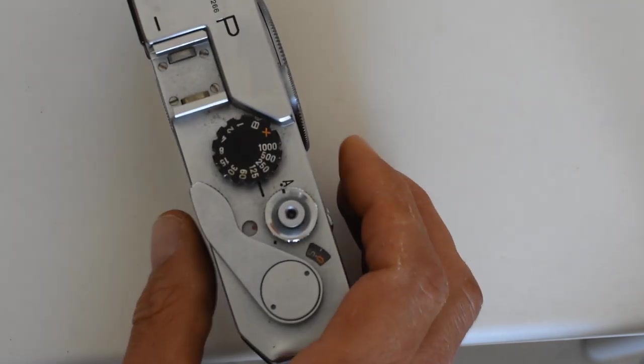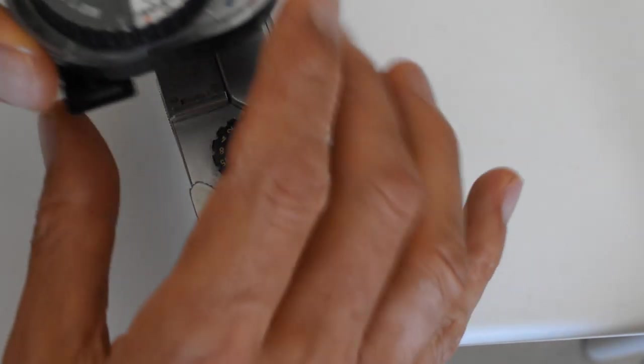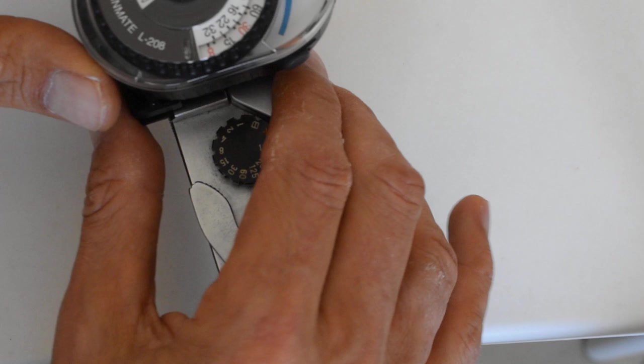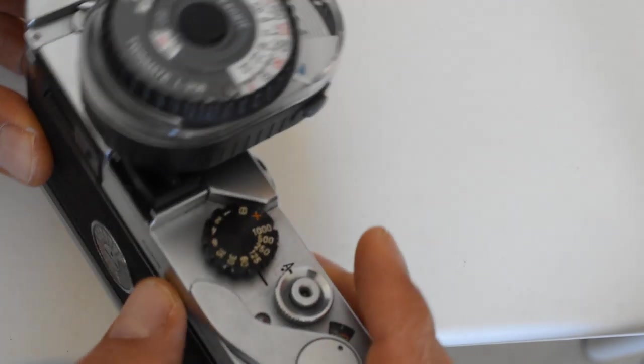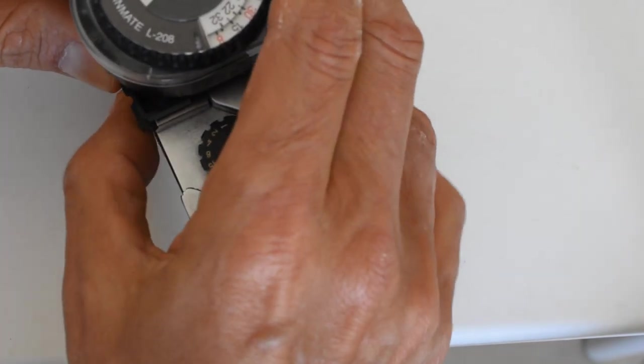For example, if you use old rangefinders like Canon P, the 208 will mount right up top in the accessory shoe and it's very convenient.